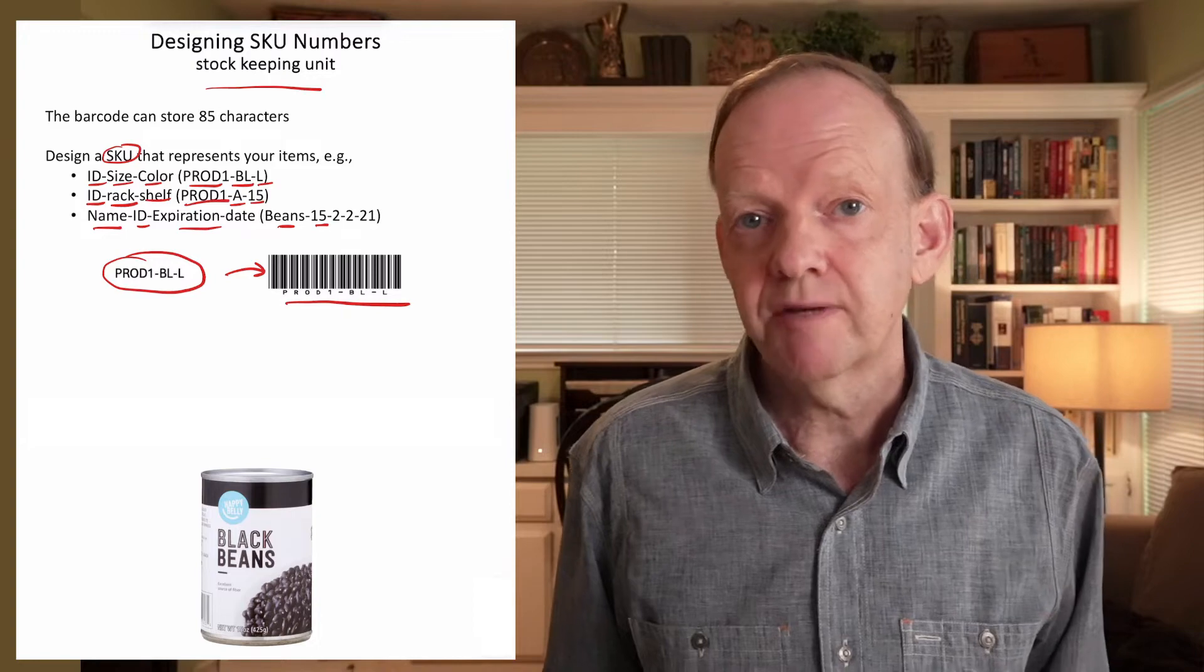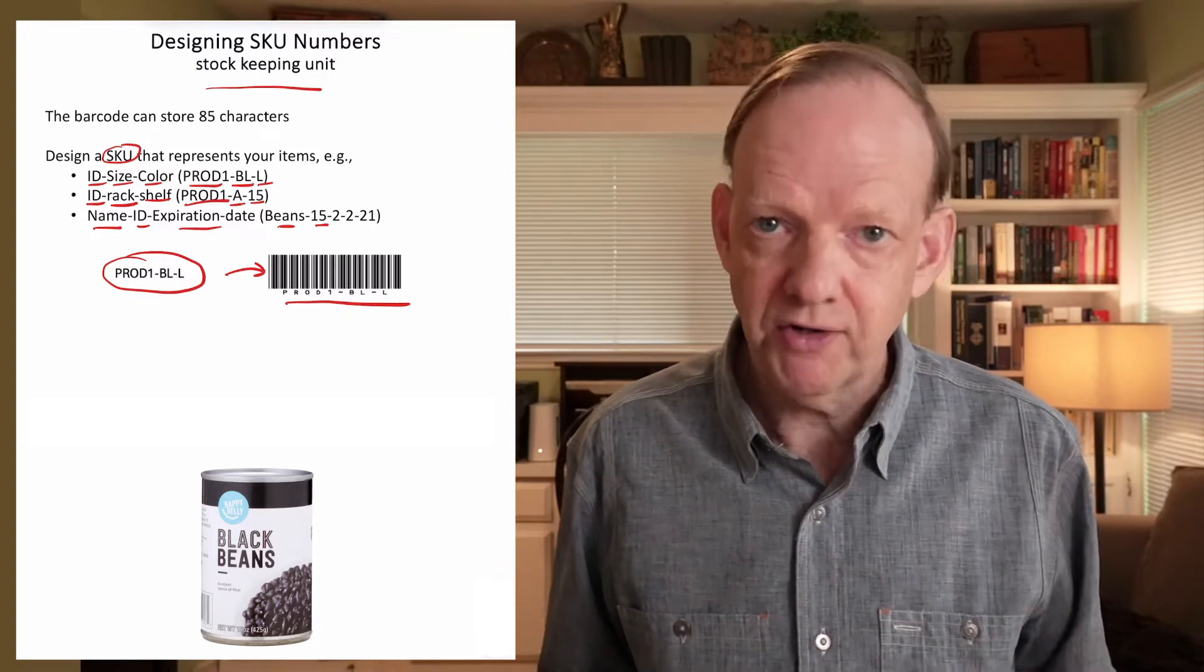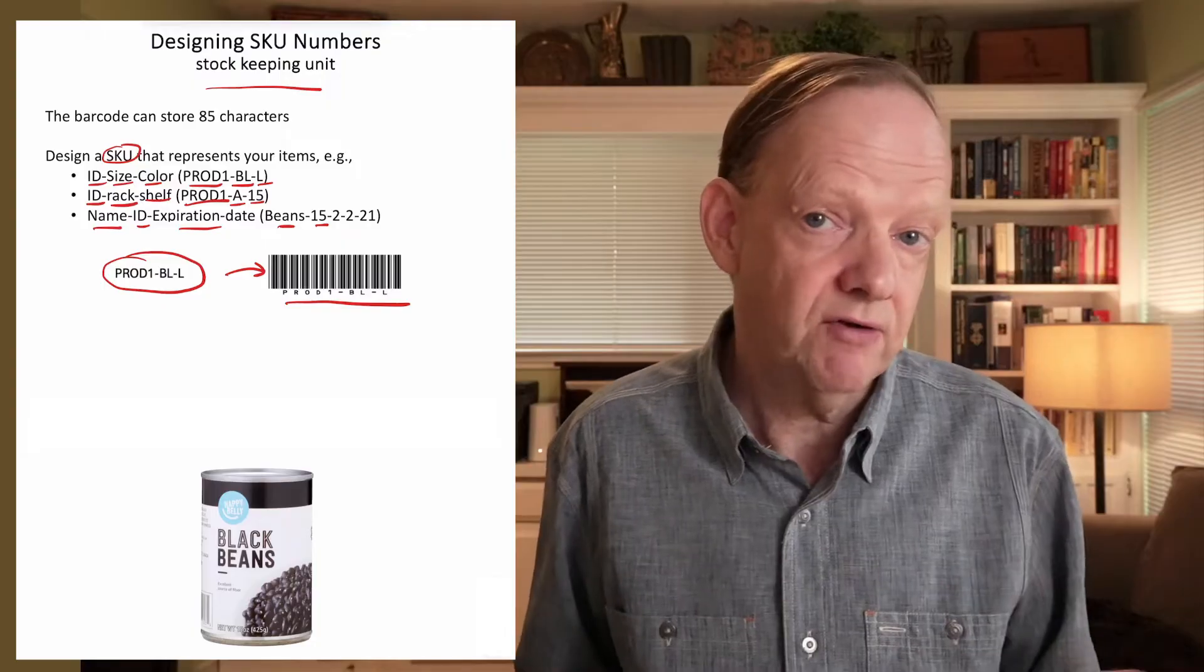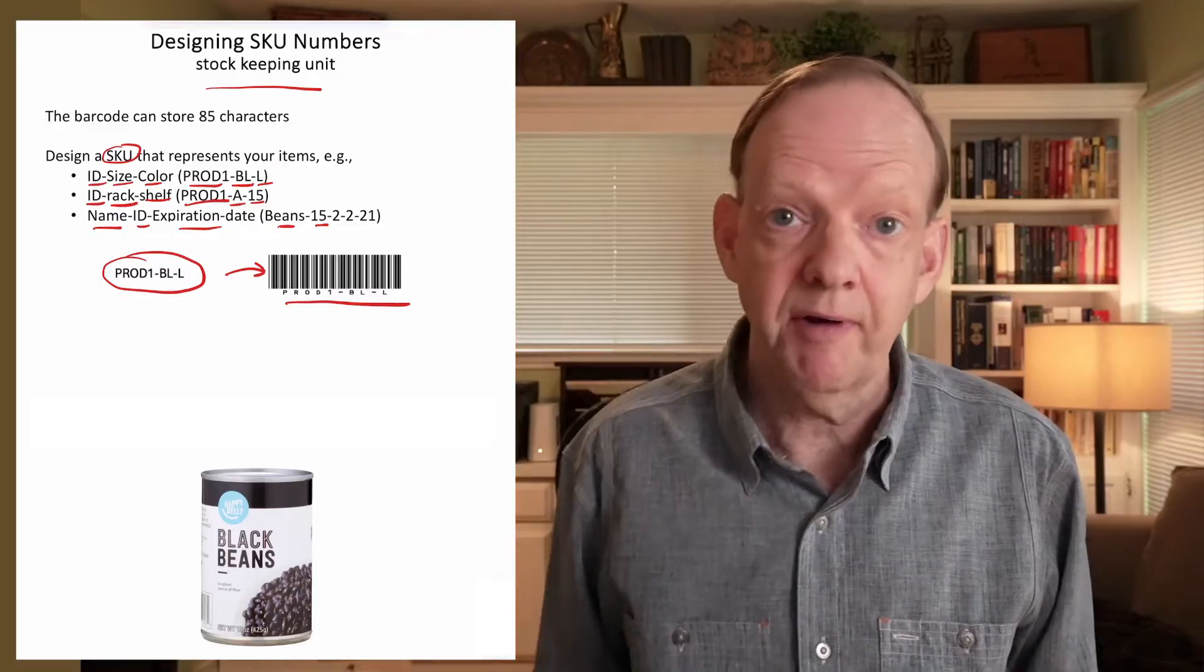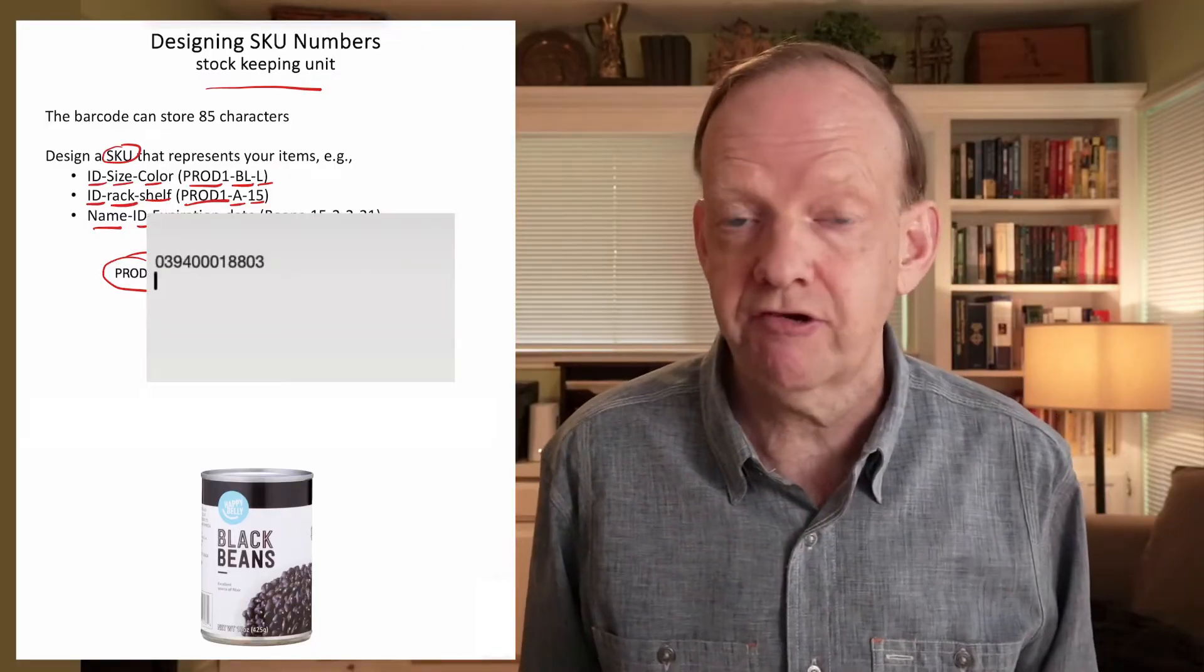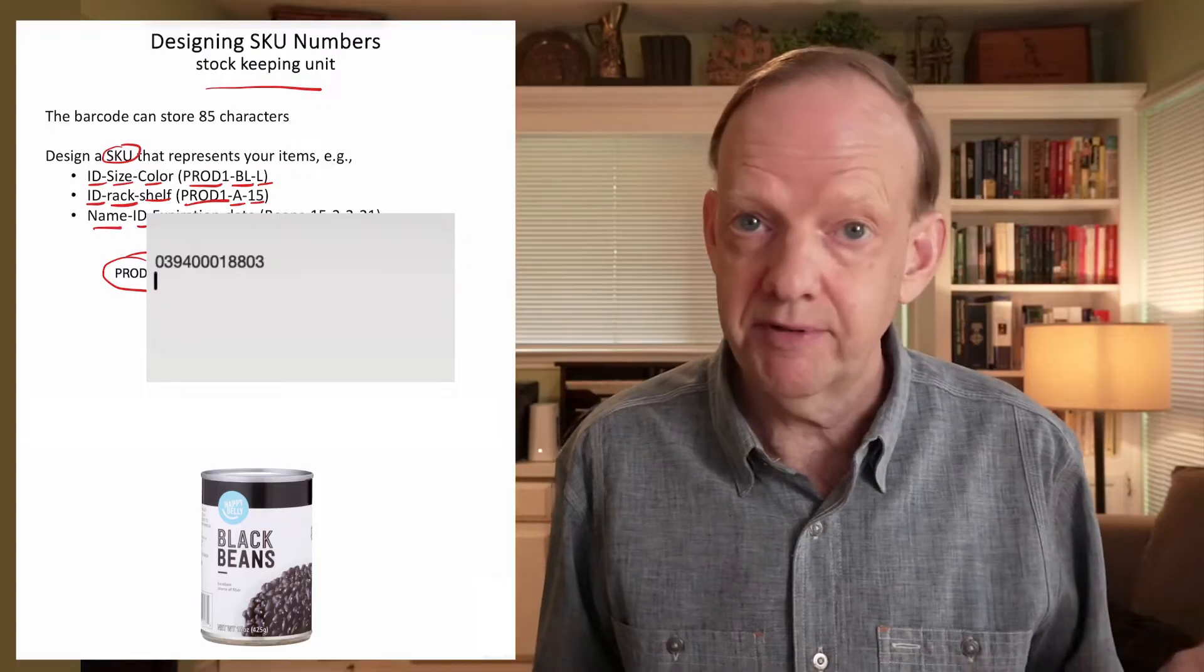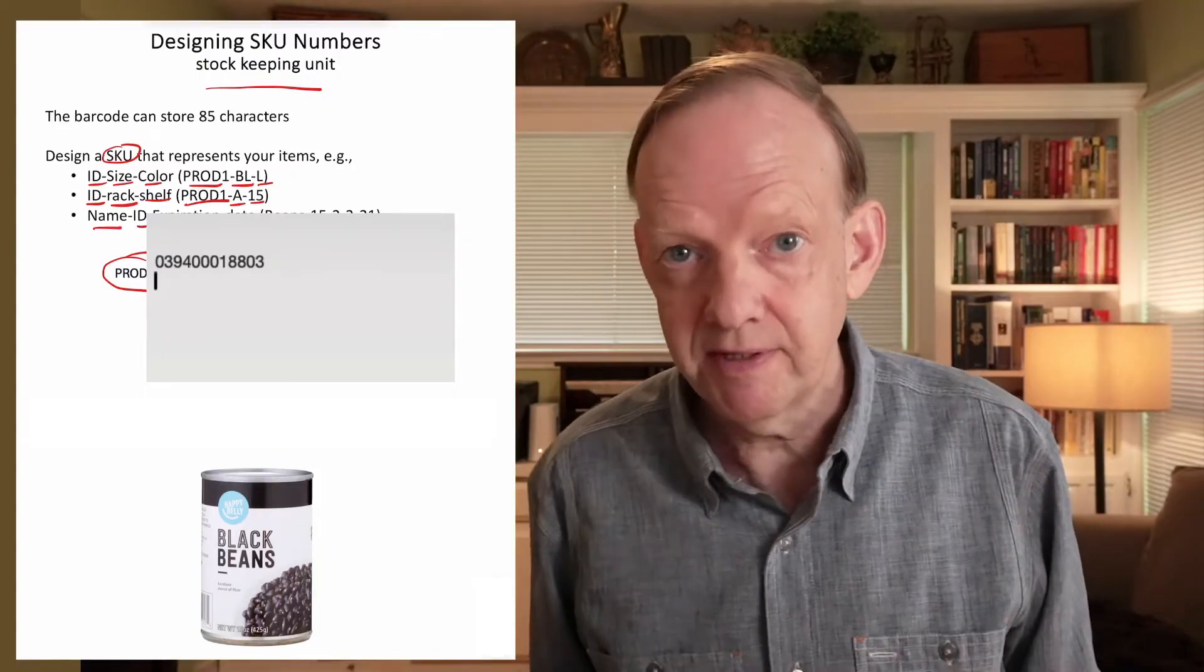Now, you might decide to use the barcodes that exist on the products already. The manufacturer will put a barcode on there, or maybe the supplier with the packaging. And that may be unique enough for you to use. So I have a can of beans here. It has a barcode on it. If I scan the barcode, you see on my screen, my scanner picked up the barcode and gave me the number. Now I could, in my database, define that as a can of beans.